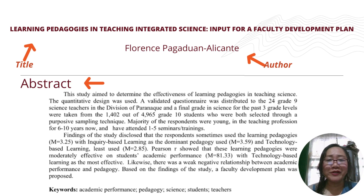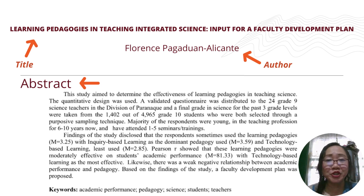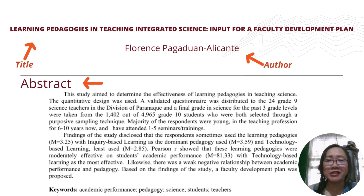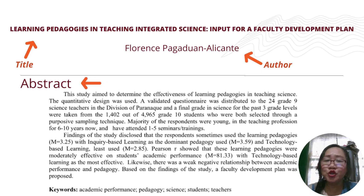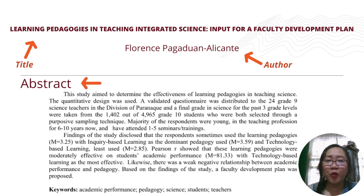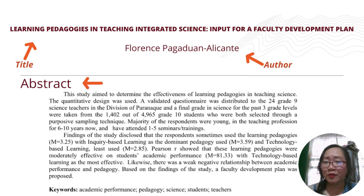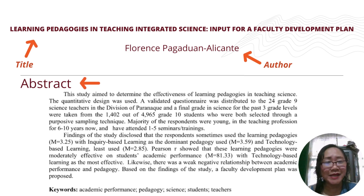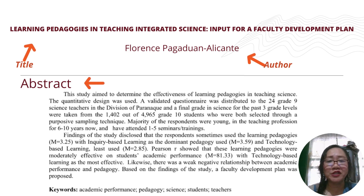Below the author is the abstract. The abstract is the summary of the content of your research paper or research article. Usually, an abstract consists of 250 words. If your abstract exceeds the word count, you can consider paraphrasing some sentences in order to make it exactly 250 words.